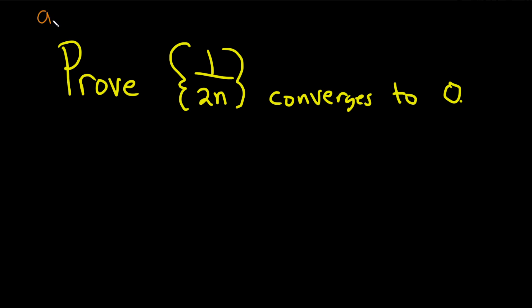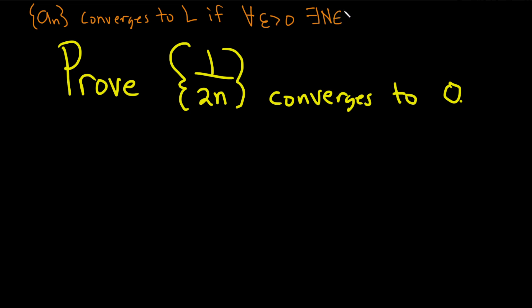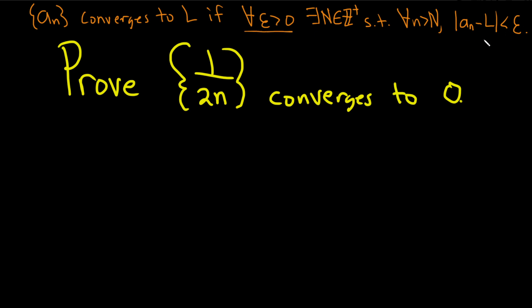We say that a sequence a sub n converges to L if for all epsilon greater than zero — the upside-down A means 'for all' — there exists a positive integer N in the set of positive integers, such that for all little n bigger than capital N, the terms of a sub n get really close to the limit. So the absolute value of a sub n minus L can be made small — smaller than epsilon.